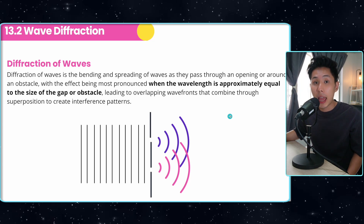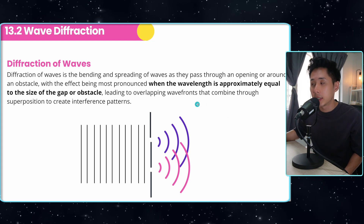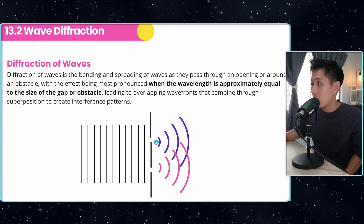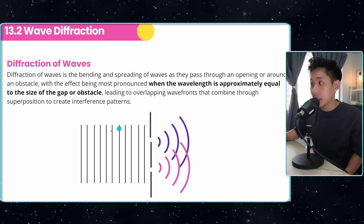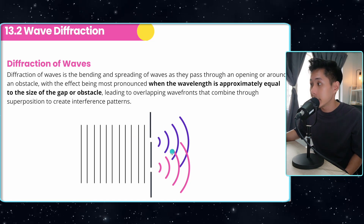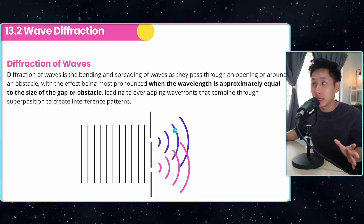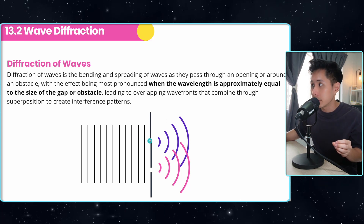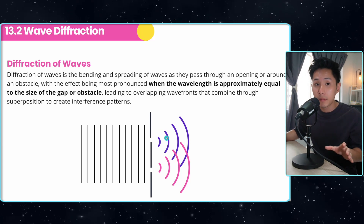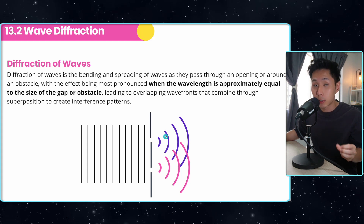Superposition and diffraction are closely related. Diffraction is the bending of waves as they pass through an opening or around an obstacle. For example, if this is a water wave and this is a gap, as they pass through the gap, this is the pattern that will be produced. Usually the diffraction effect is greatest when the wavelength is approximately the size of the gap. When you have two or more gaps, the resulting waves interfere with each other and superposition occurs to create patterns.